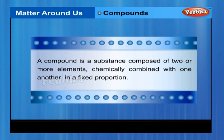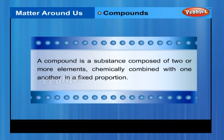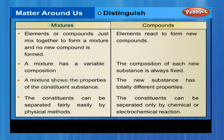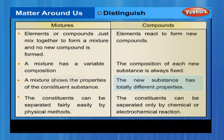A compound is a substance composed of two or more elements chemically combined with one another in a fixed proportion. Differences between mixtures and compounds: In a mixture, elements or compounds simply mix together and no new compound is formed, whereas in a compound, elements react to form new compounds. A mixture has a variable composition, while the composition of a compound is always fixed. A mixture shows the properties of its constituent substances, whereas the new compound has totally different properties. The constituents of a mixture can be separated fairly easily by physical methods, while those of a compound can only be separated by chemical or electrochemical reactions.